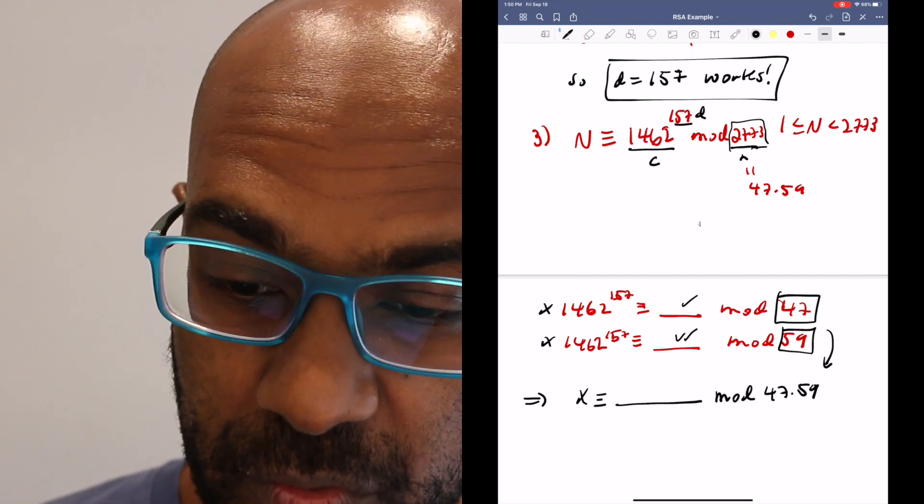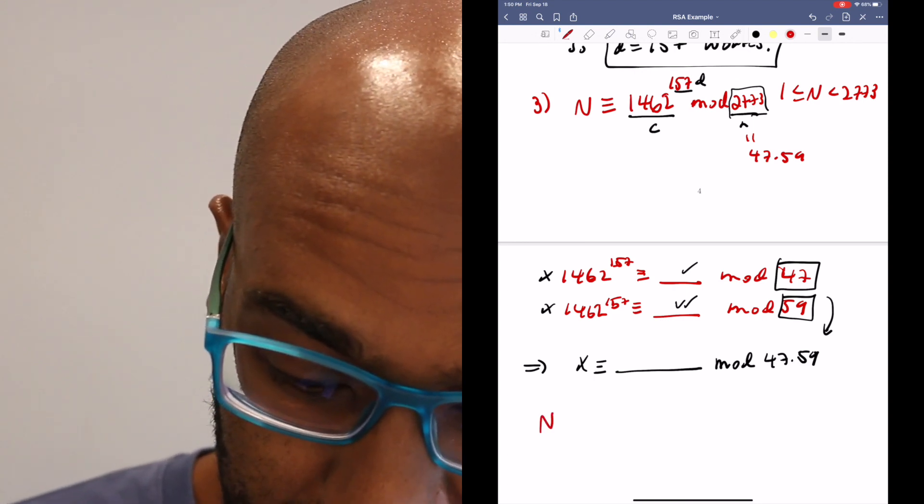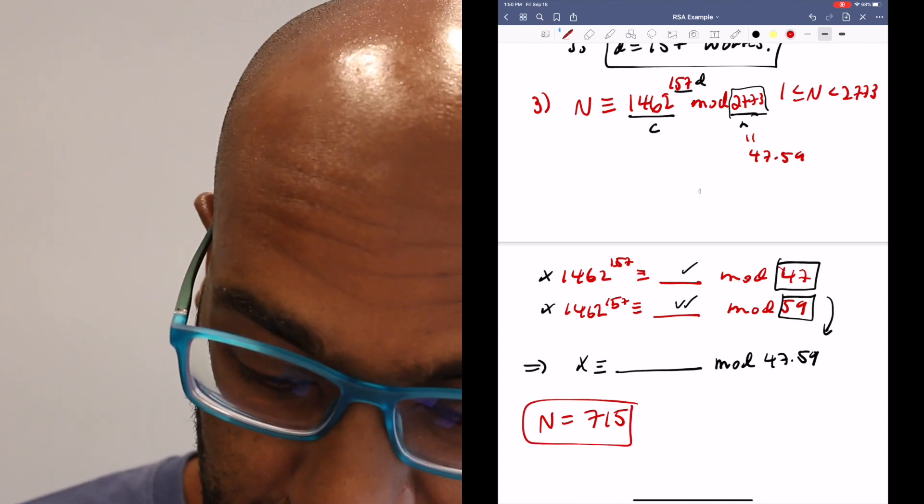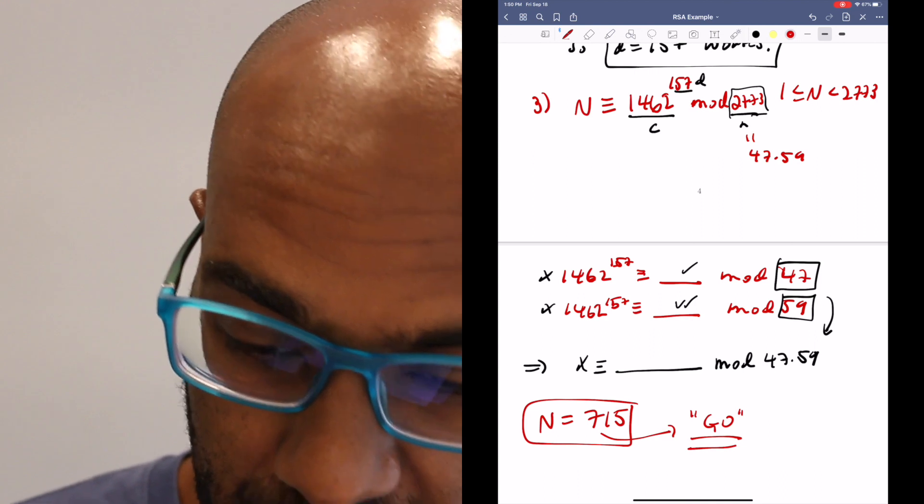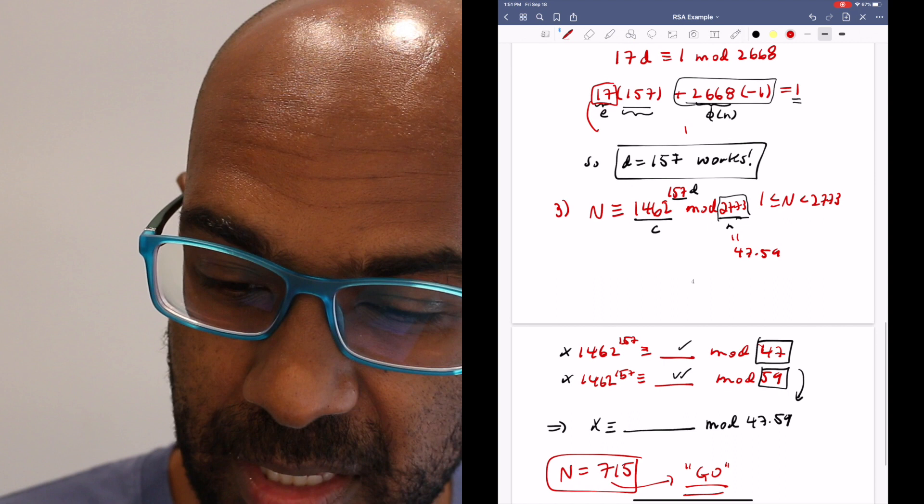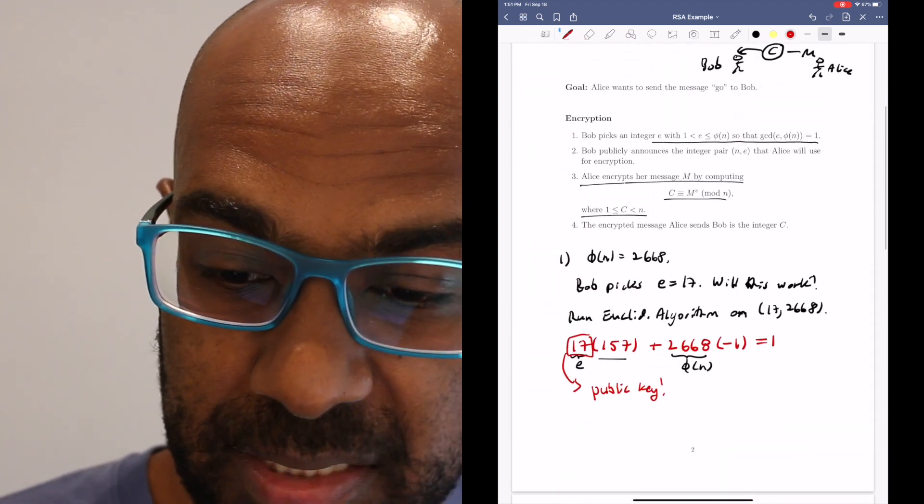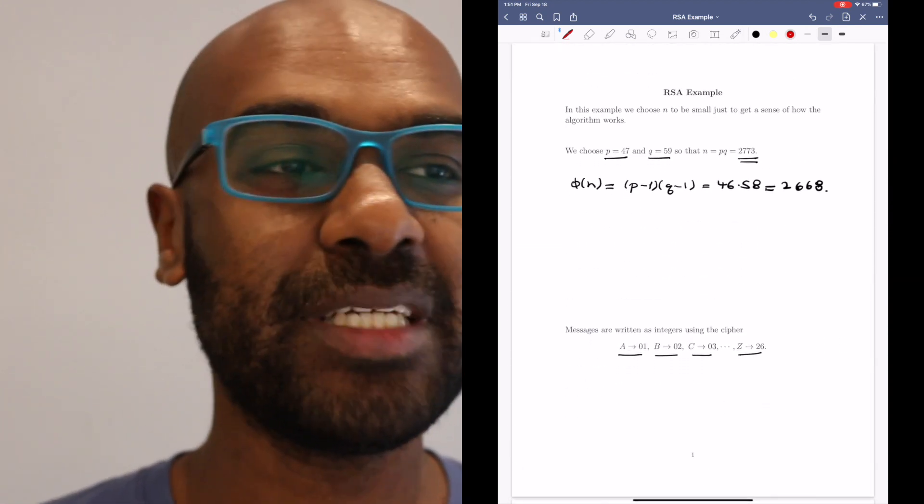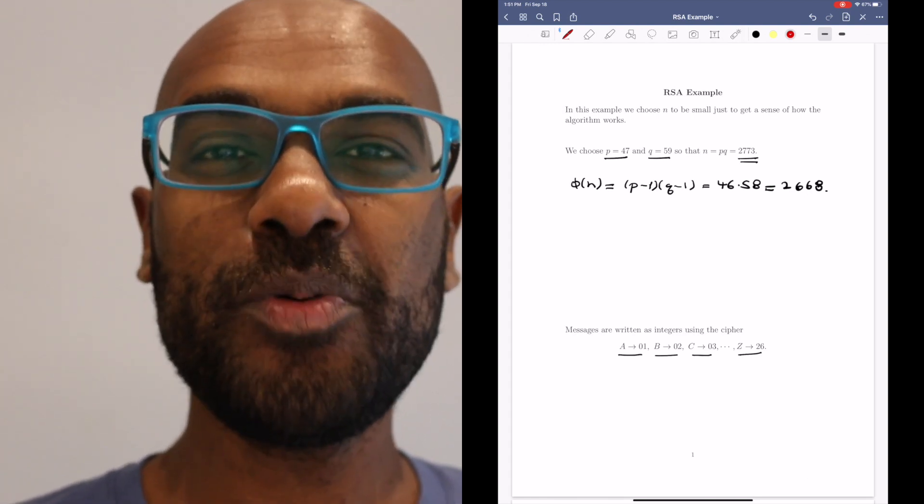If you actually do this process, which I highly recommend you do, you end up with M being 715, which is exactly the message 'go'. So a really cool process in going about employing the RSA encryption algorithm with a concrete example. I suggest you try this and fill in a lot of the modular details so you actually get a feel for what it's like to run this algorithm. I hope you enjoyed today's video.